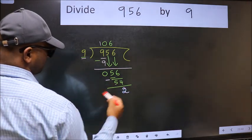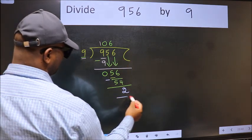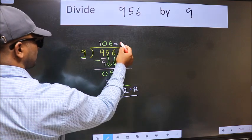We get 2. No more numbers to bring down, so we stop here. This is our remainder and this is our quotient.